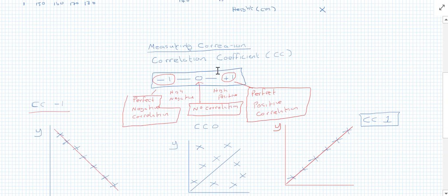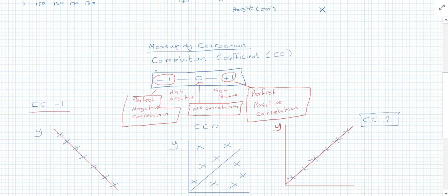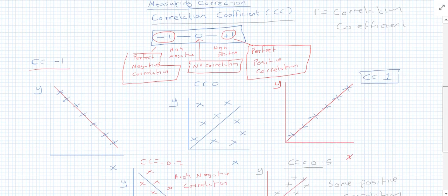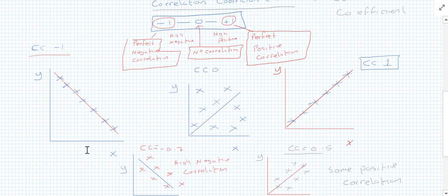So that's what we mean by the correlation coefficient. In maths, the letter actually used to represent it is the letter r. So r equals the correlation coefficient. This lets us describe using numbers the relationship between two variables.